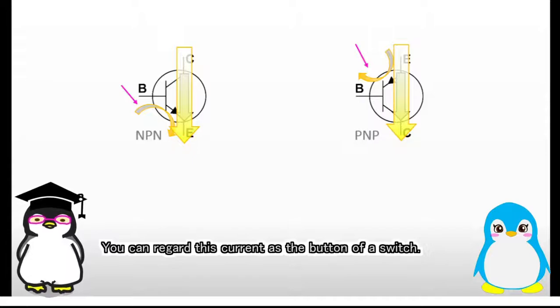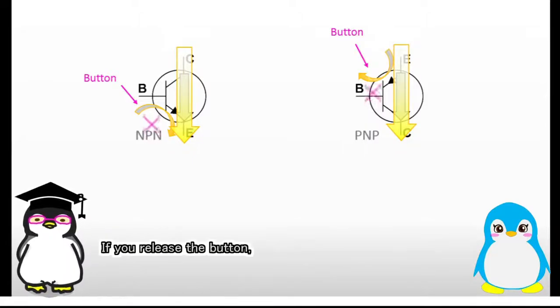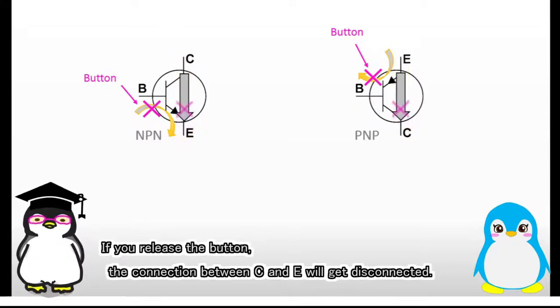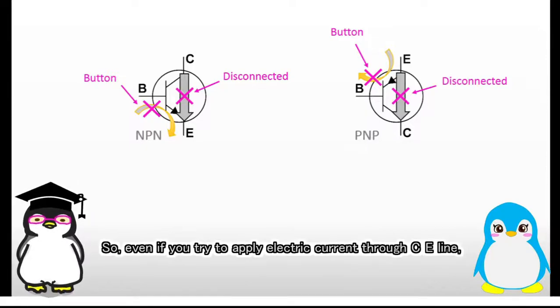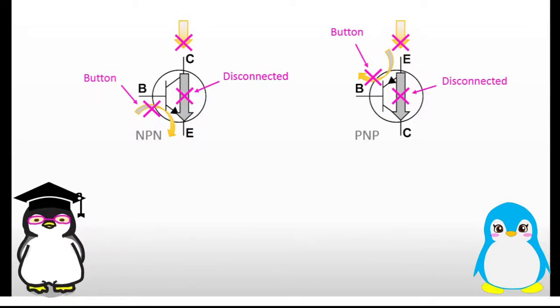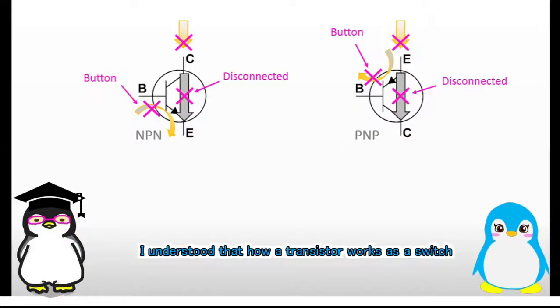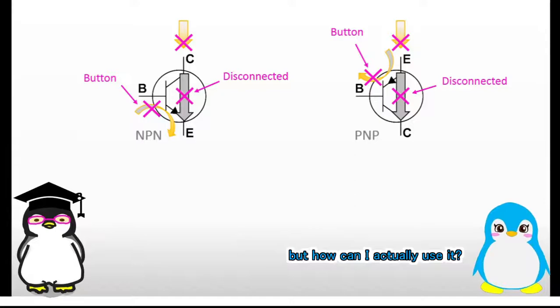You can regard this current as the button of a switch. If you release the button, the connection between C and E will get disconnected. So even if you try to apply electric current through CE line, the current cannot flow. I understood how a transistor works as a switch, but how can I actually use it?